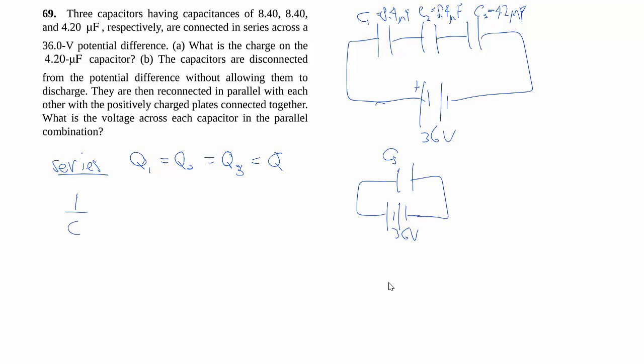So because in series, 1 over Cs is equal to 1 over C1 plus 1 over C2 plus 1 over C3, subbing in the number, taking the reciprocal, we get 2.1 microfarads.